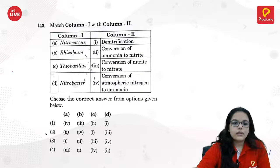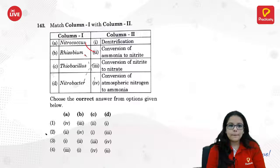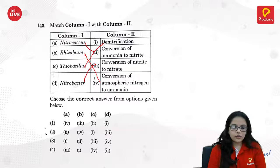Nitrococcus — conversion of ammonia to nitrate. Rhizobium — conversion of atmospheric nitrogen to ammonia, that is nitrogen fixation. Pseudomonas — denitrification. Nitrobacter — conversion of nitrate to nitrogen, that is denitrification.